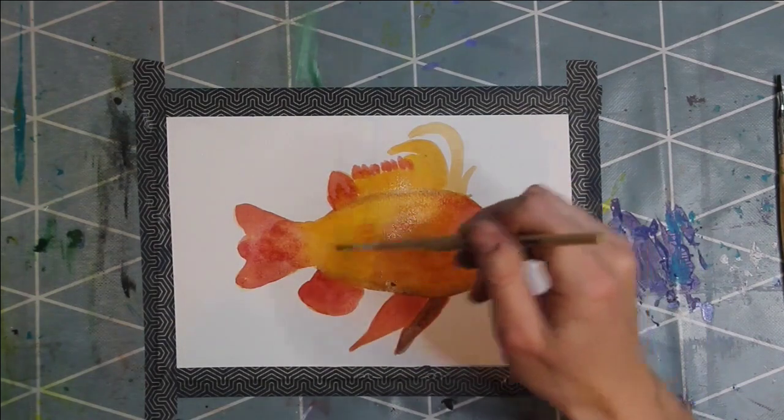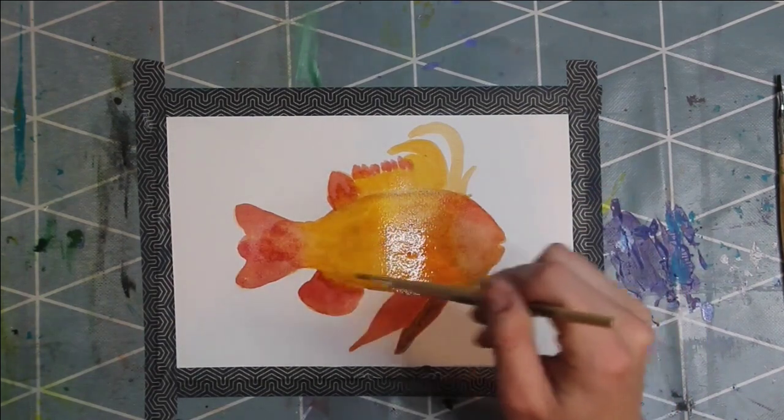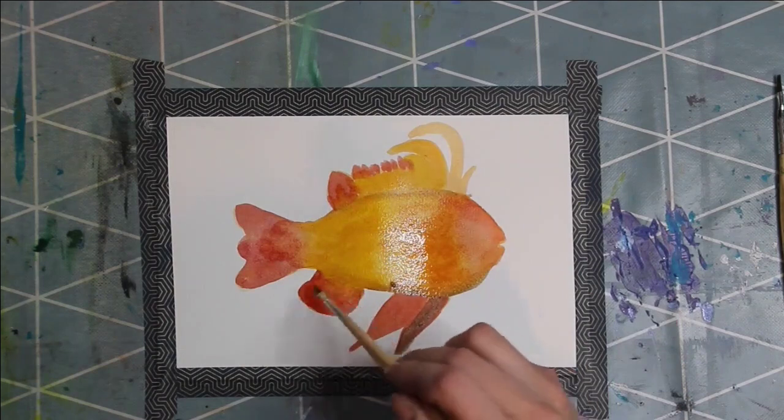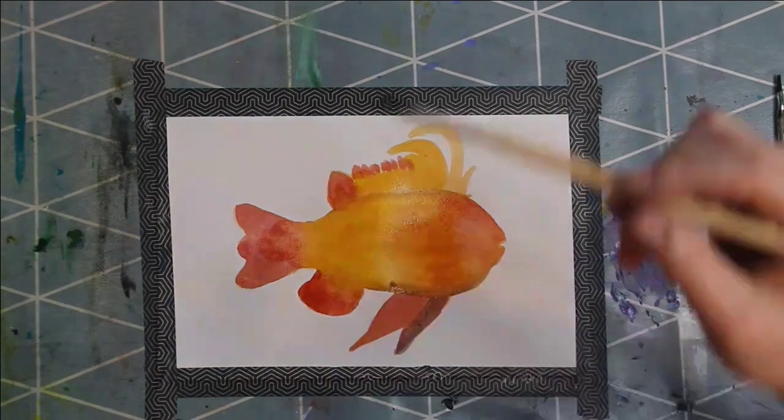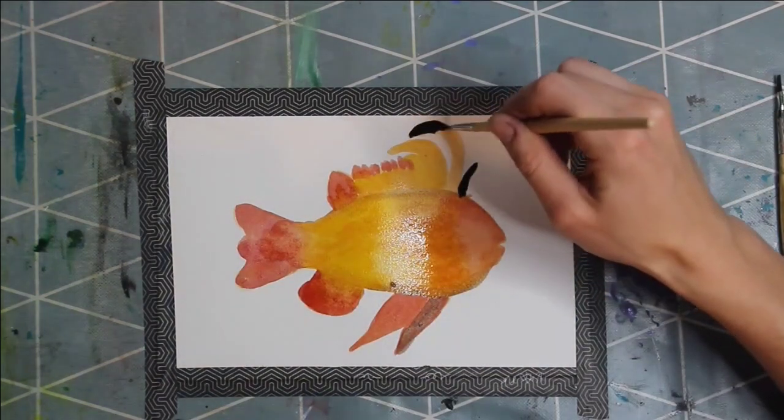For the fin in the background I use a grey to make clear that this is the fin of the other side. Black for the first fins above the head and for some black parts.